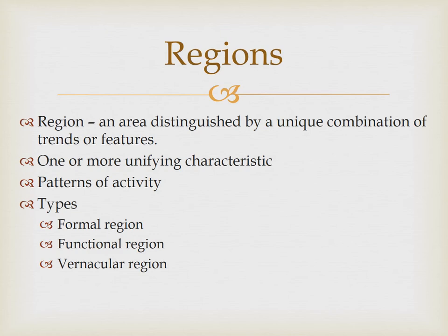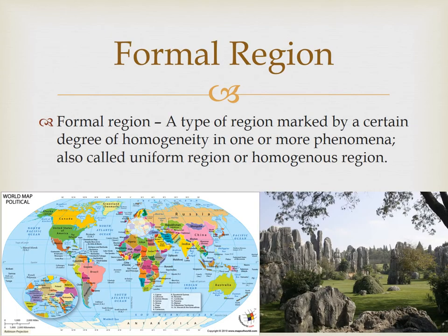There are three types of regions that we need to be familiar with: formal, functional, and vernacular. A formal region is a type of region marked by a certain degree of homogeneity in one or more phenomena. It's also called a uniform region or homogeneous region. Make sure you're familiar with those alternative names because they're often used interchangeably and we don't know which one will be thrown our way.